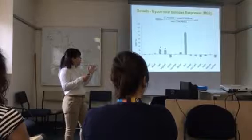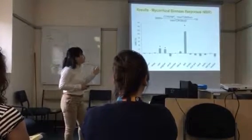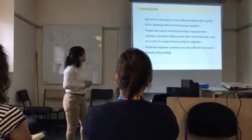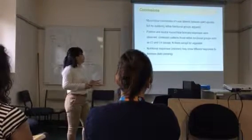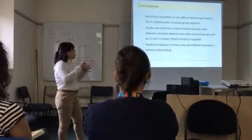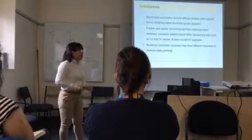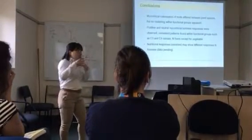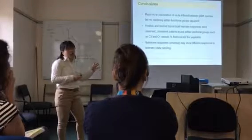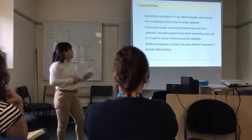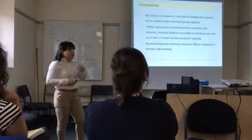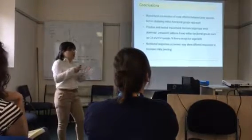I also obtained another set of data on mineral nutrition response to AM formation; however, I have not received that data yet. In conclusion so far: mycorrhizal colonization of roots differs between plant species with no clear clustering within functional groups. Positive and neutral mycorrhizal biomass responses were observed, with a consistent pattern found within functional groups such as C3 and C4 cereals and nitrogen-fixing plants, except for vegetables. The nutritional response data is still pending.